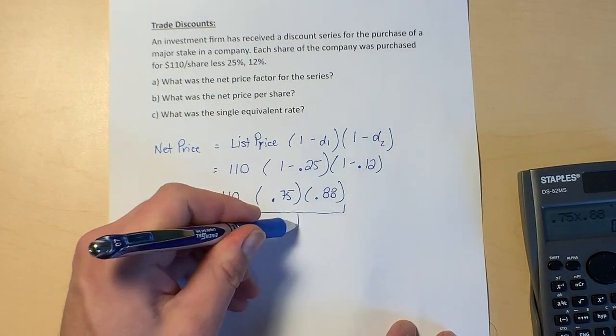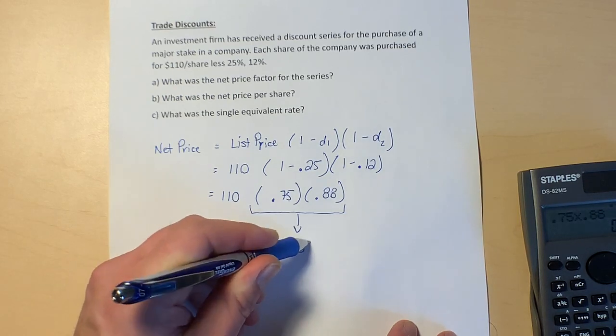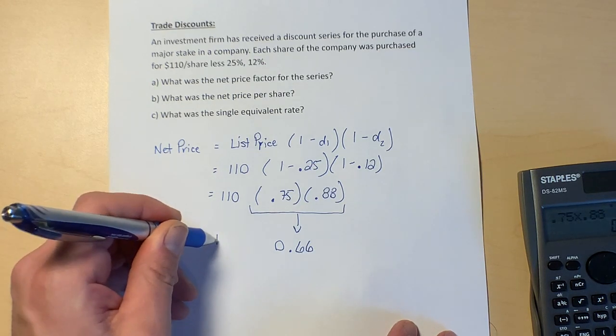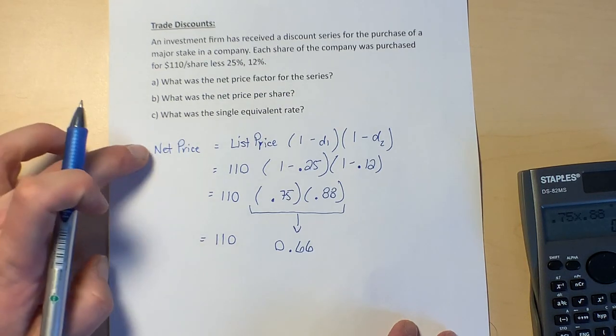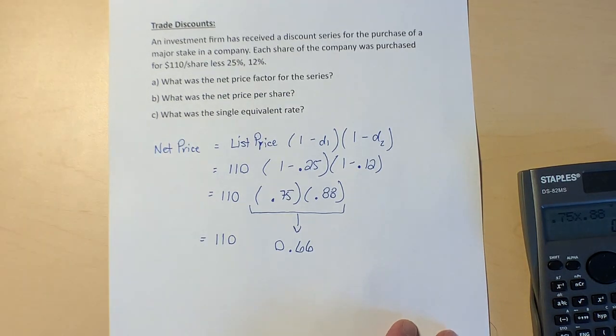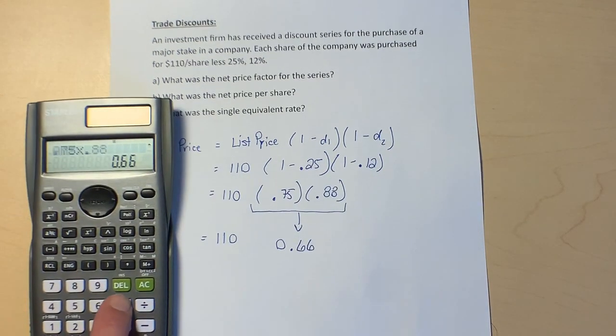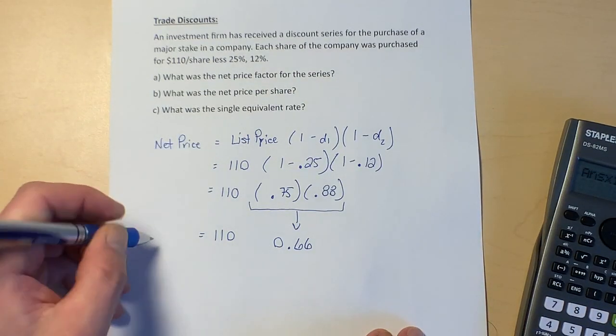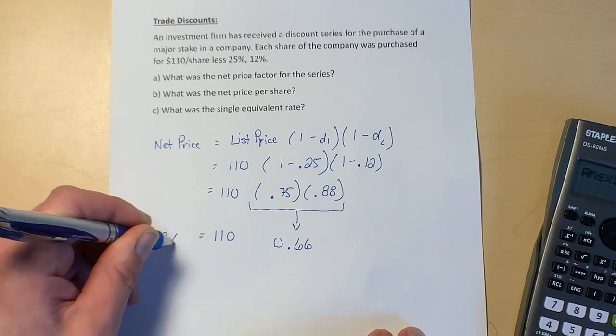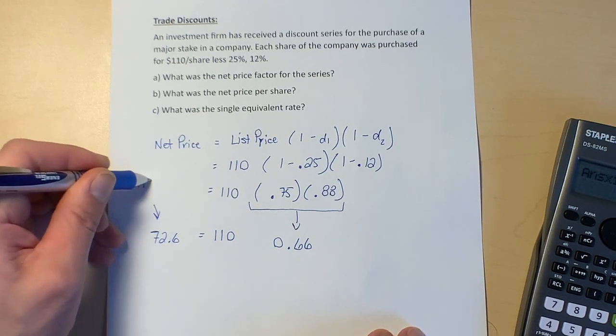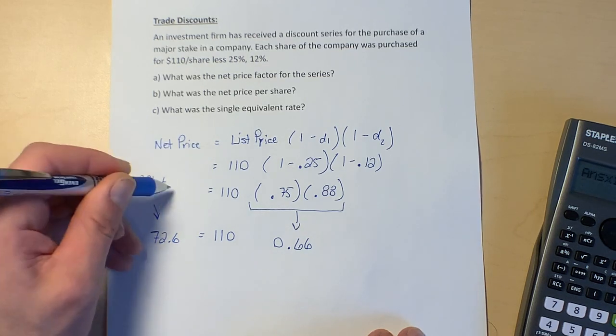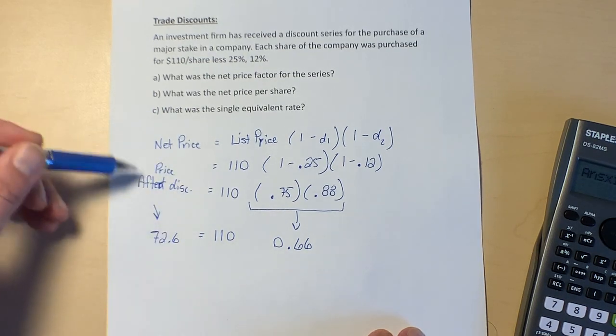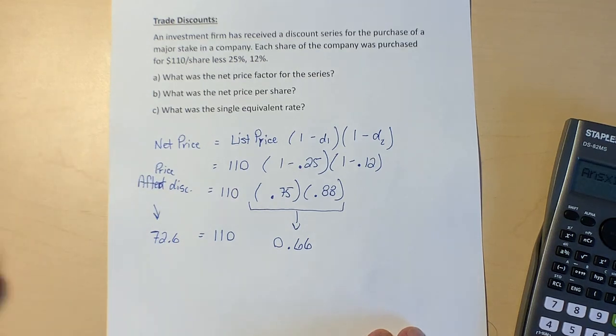This is 0.66. When I go to multiply this by the price—$110—I'm going to get the net price, or the price that we pay after the discounts. So 0.66 times 110 gives us 72.60. So our net price—the price after discounts—is $72.60.